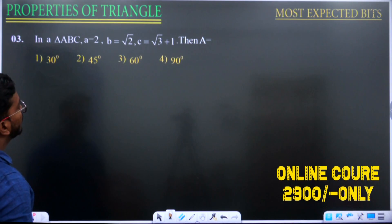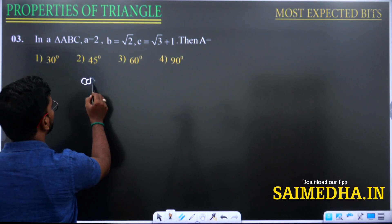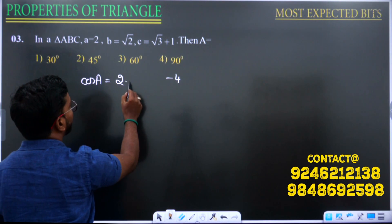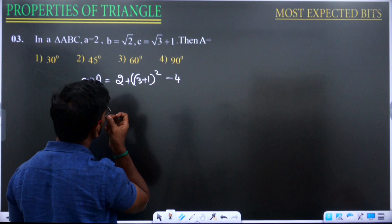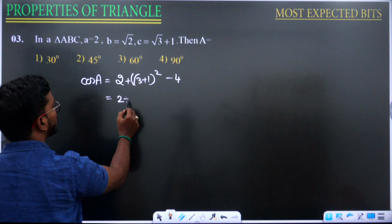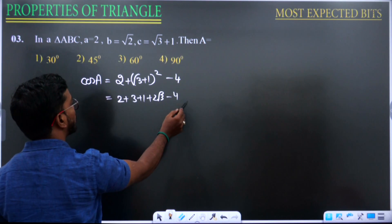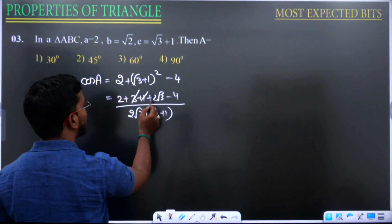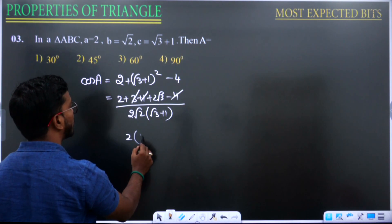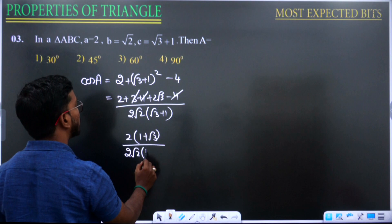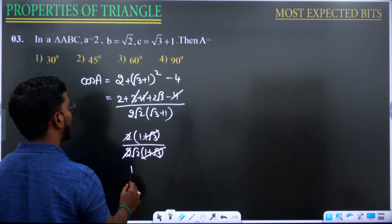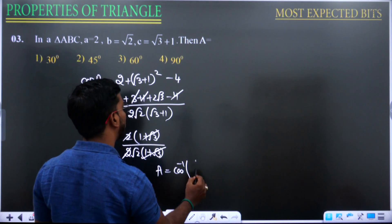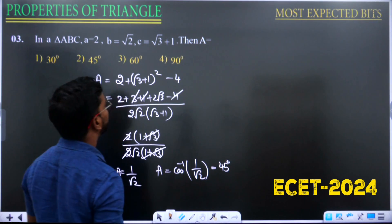Moving on to another expected question: given a = 2, b = √2, c = (√3 + 1), find angle A. Applying cos A = (b² + c² − a²) / 2bc = (2 + (3 + 1 + 2√3) − 4) / (2 × √2 × (√3 + 1)). Simplifying: numerator becomes 2 + 2√3 = 2(1 + √3); denominator becomes 2√2(1 + √3). The (1 + √3) cancels, leaving 1/√2. Therefore A = cos⁻¹(1/√2) = 45°.